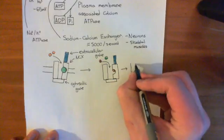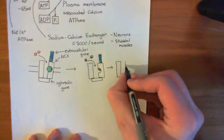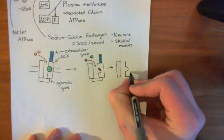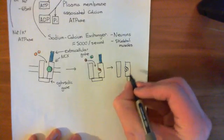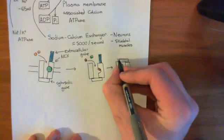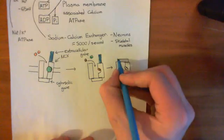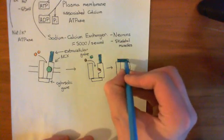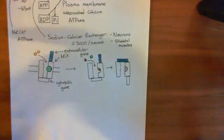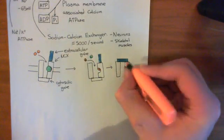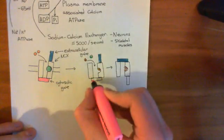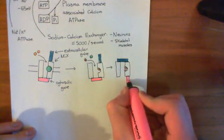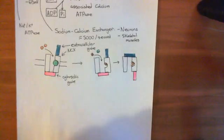You now have three sodium ions bound to the binding site. The cytosolic gate has opened and the extracellular gate has closed, because the binding of these three sodium ions has changed the conformation. Our calcium ion has now gone off into the extracellular compartment where we want it to be. This pink represents the cytosolic gate, which is now open.